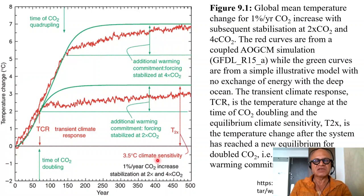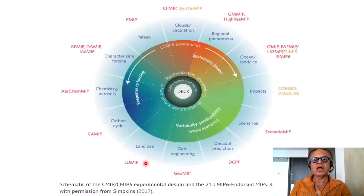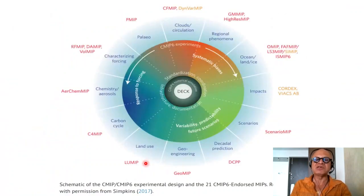The climate sensitivity for doubling here is shown as 3.5 degrees C, and the idea is to check how the models compare. Model comparison is a very detailed task.